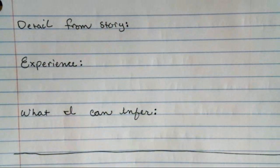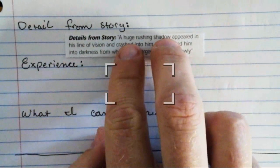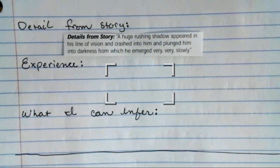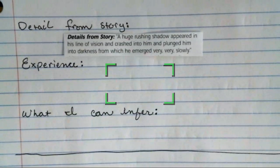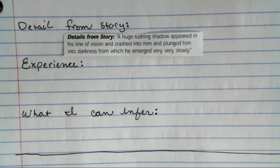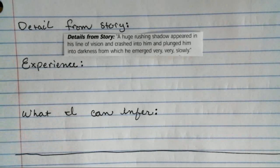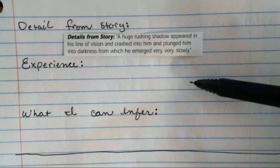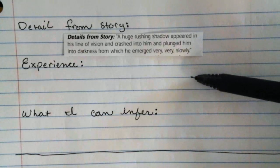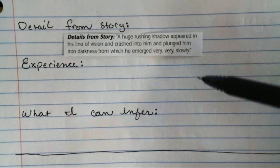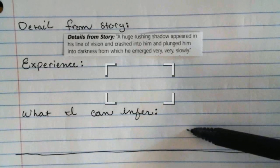Your next detail from the story is: 'A huge rushing shadow appeared in his line of vision and crashed into him and plunged him into darkness, from which he emerged very, very slowly.' What is your experience with big rushing shadows crashing into you? What can you infer?